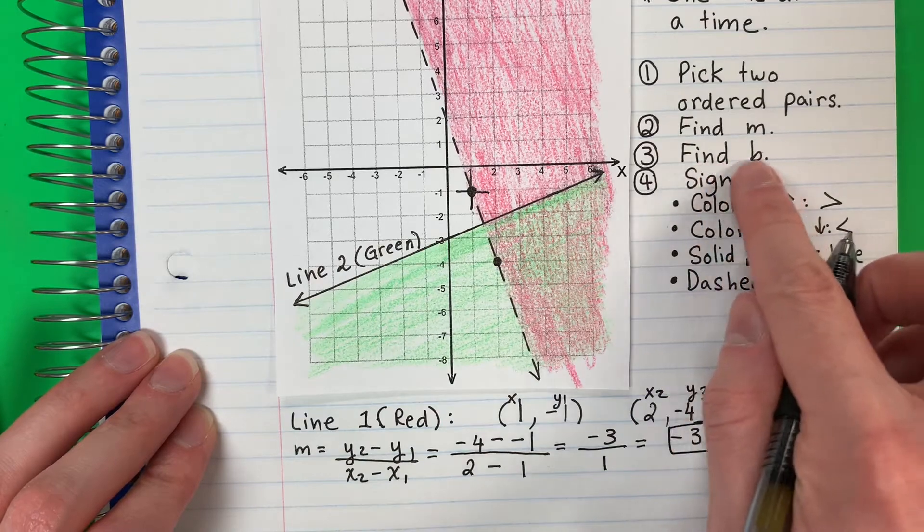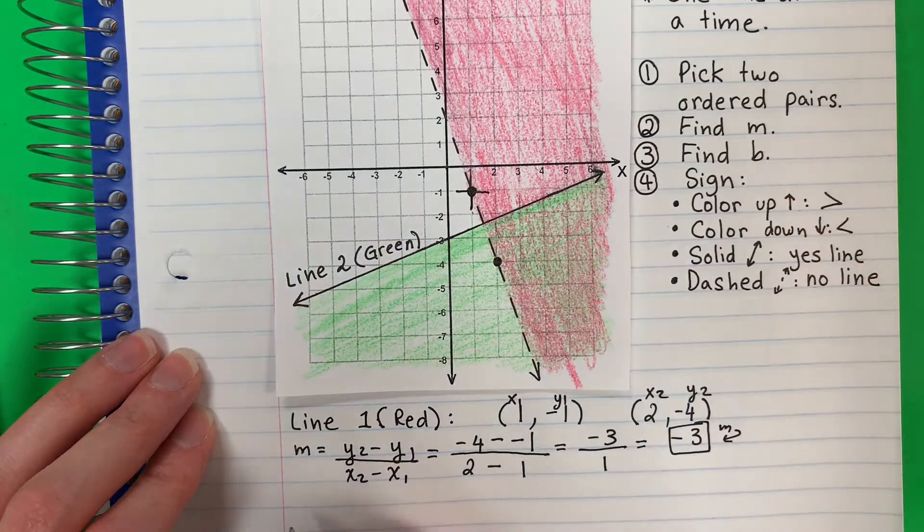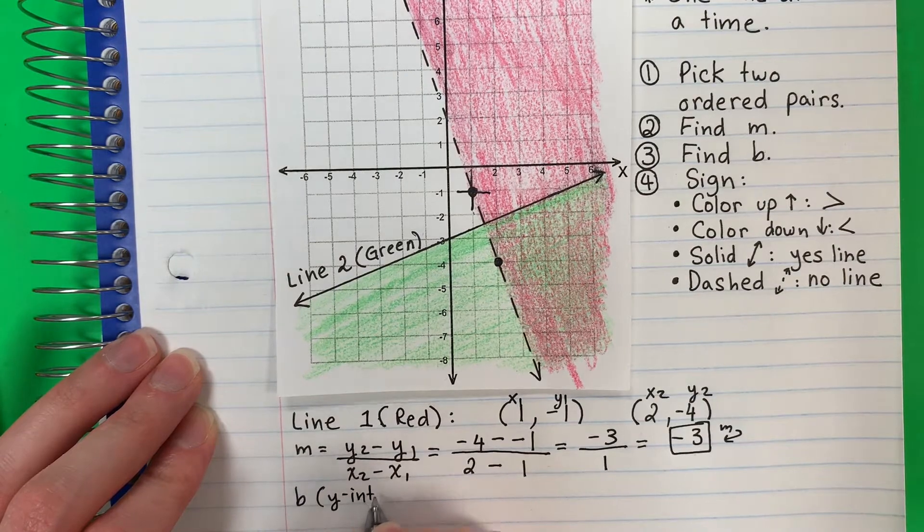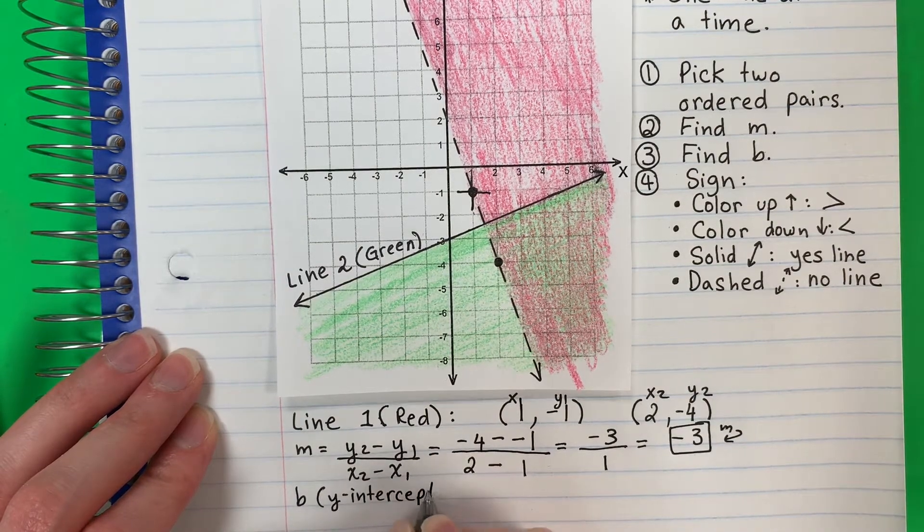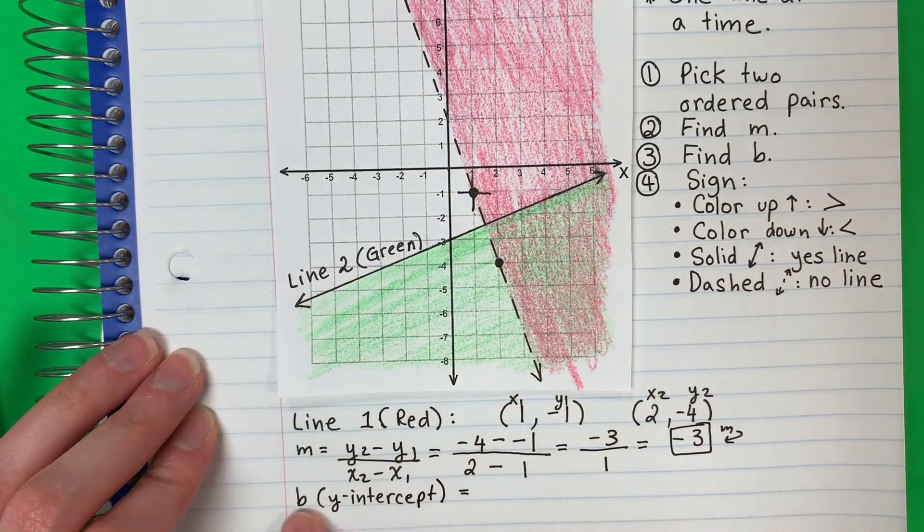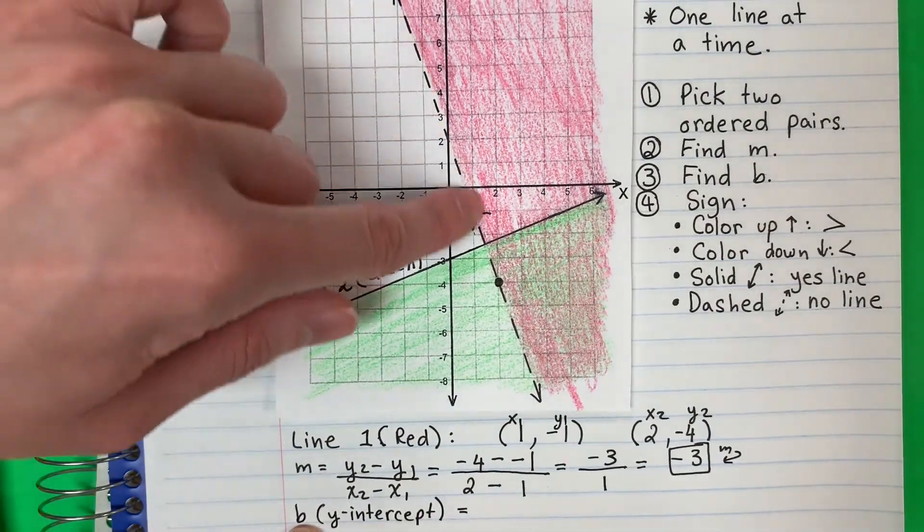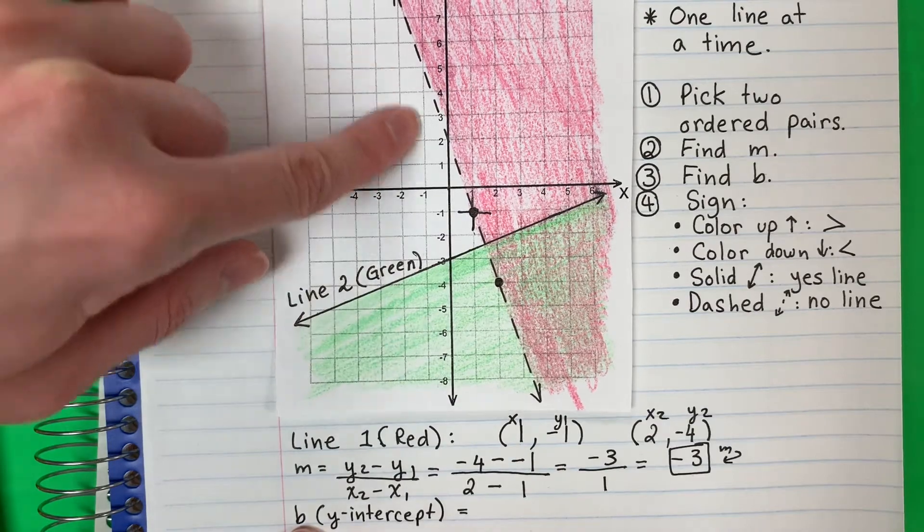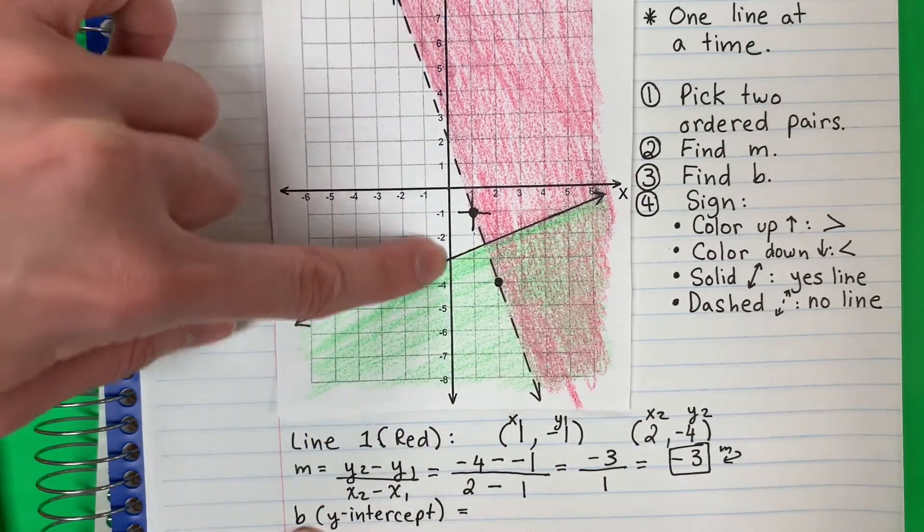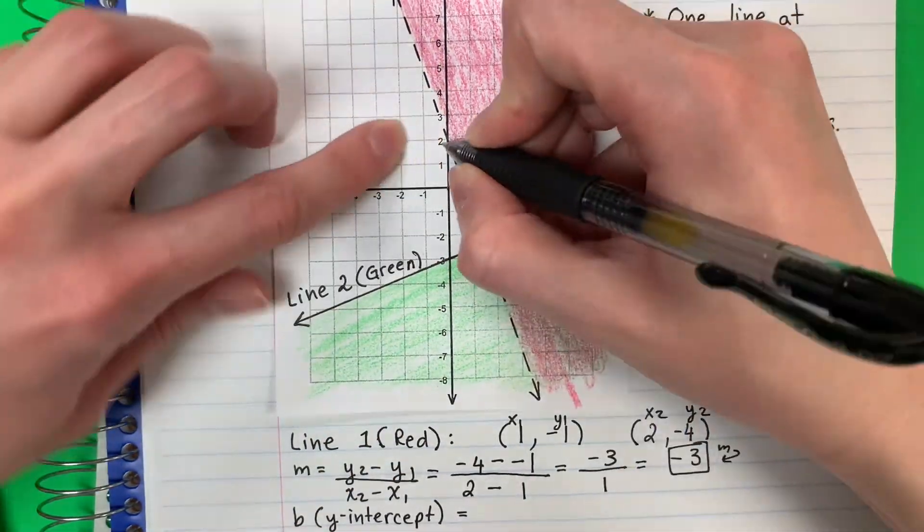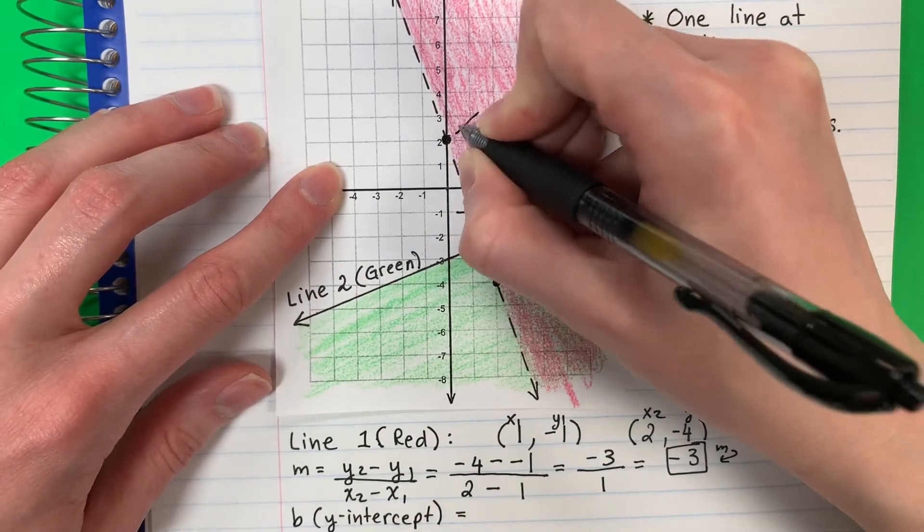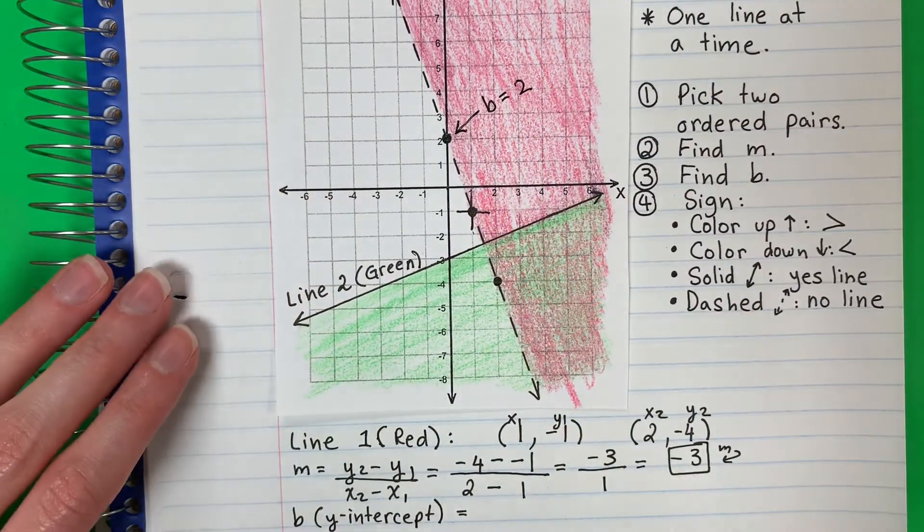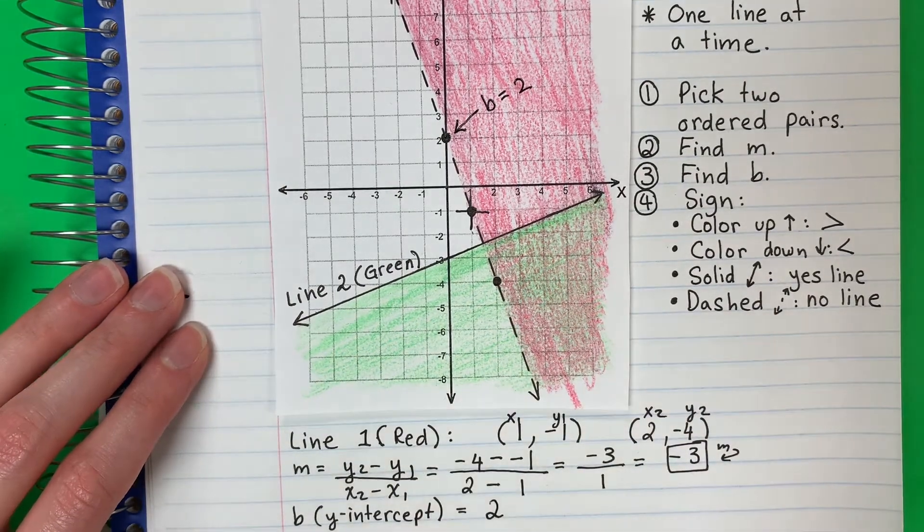Next I need to find the b, the y-intercept. So the y-intercept is where this line touches the y, donde esta línea toca el y. It touches right here on 2. So b equals 2.